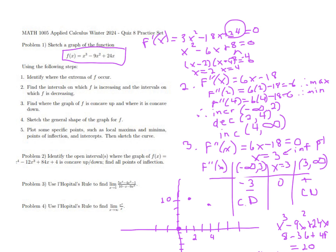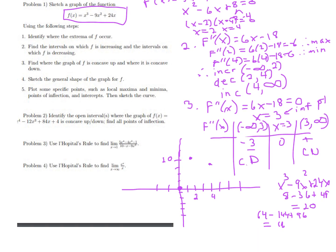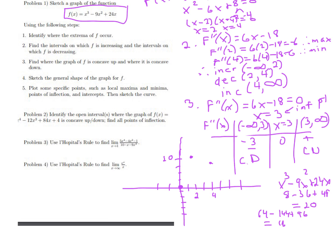We also know our inflection point, which we'll label in a moment. Based on everything we've found, the graph comes up, reaches the max at (2, 20) and turns around — that's why we call it a turning point. It comes down through the inflection point at x = 3, reaches the minimum at (4, 16), then turns around and goes up forever.